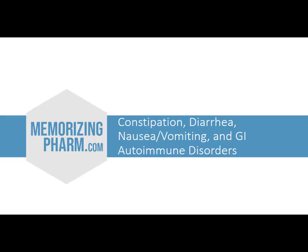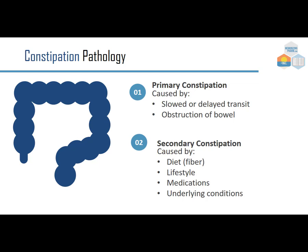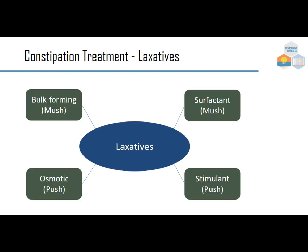Moving to constipation: primary constipation is caused by slowed or delayed transit or bowel obstruction; secondary constipation may be caused by diet and lack of fiber, lifestyle, medications, or underlying conditions. Treatments include bulk-forming laxatives, surfactants, osmotic agents, or stimulants. The key difference is that some bring water into the bowel to create a softer 'mush,' while others propel contents forward with more of a 'push.'